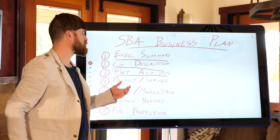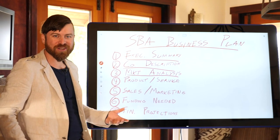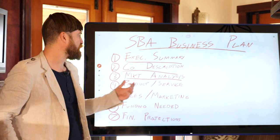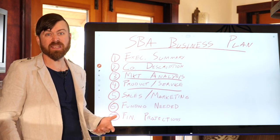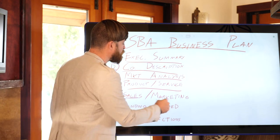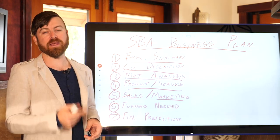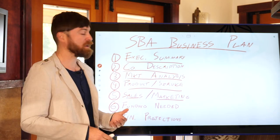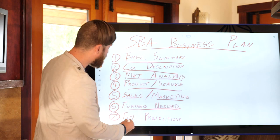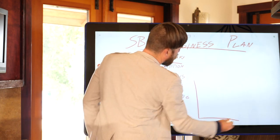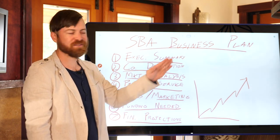Number three is market analysis — getting into why you think you can succeed, how many people are in the market, who the competitors are, and what market share they have. Fourth, you need a product or service you're going to be selling. Fifth, you need a sales and marketing plan. Sixth, you need a funding section where you talk about how much funding you need and justify that amount. Finally, you give financial projections which, in a good business plan, should look like up and to the right — that's the little trick.